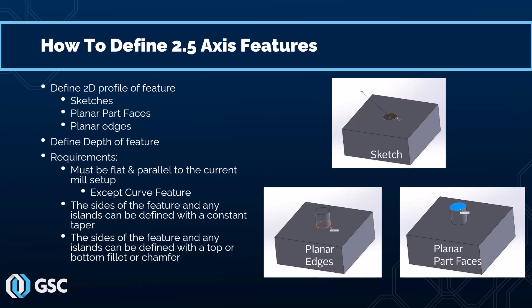Before we jump into SOLIDWORKS CAM, let's talk about how these features are defined. These features are defined using some sort of 2D profile — except for the curve feature, which uses a 3D profile. Everything else must be defined by first selecting some sort of 2D profile, which is then extruded to define the feature. 2D profiles can be defined using sketches, planar part faces, or planar edges. If you select a planar face, the system will select the outside boundary as your 2D profile. If you select planar edges, that'll be your 2D boundary. If you select a sketch, that sketch will be your outside boundary.